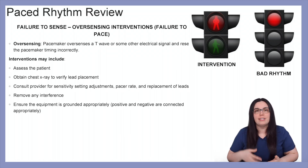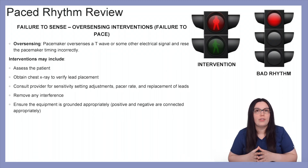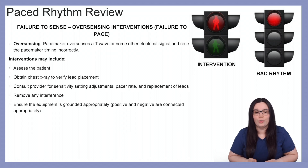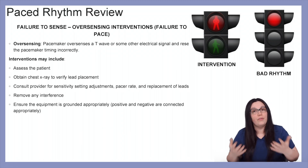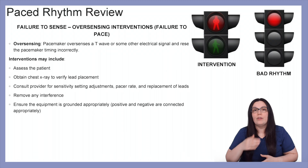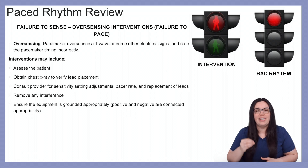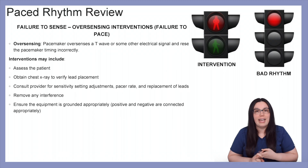For interventions, the number one thing we always want to do is assess our patient and make sure they are okay. We can obtain a chest x-ray to verify lead placement is correct. We can consult a provider for sensitivity setting adjustments, pacer rate, and replacement leads. We can remove any interference that may be causing a problem with our pacemaker, and we also want to ensure that the equipment is grounded appropriately — meaning positive and negatives are connected to the machine correctly.